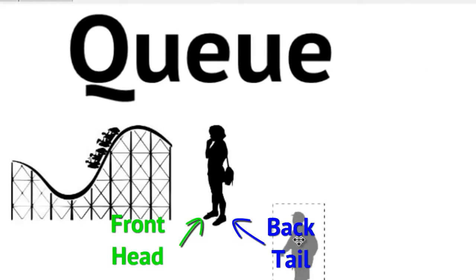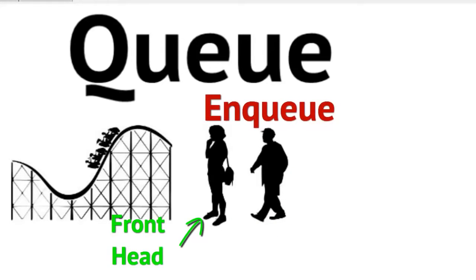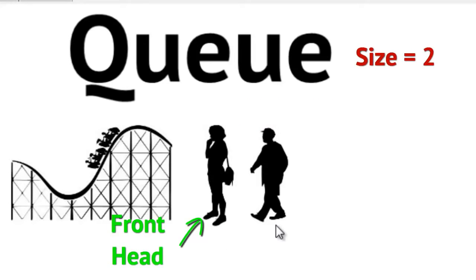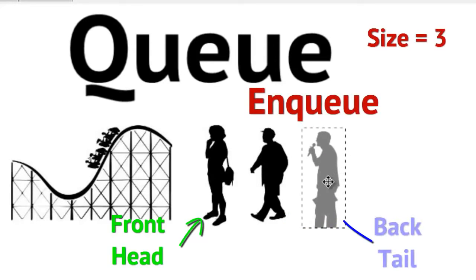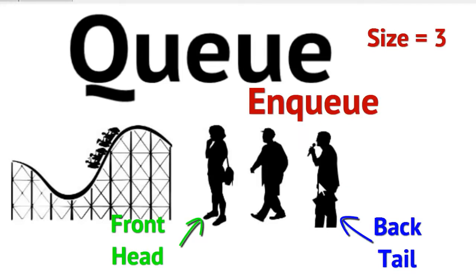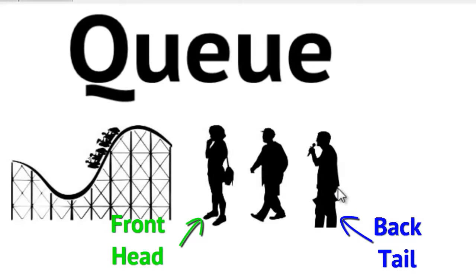Then a gentleman comes along interested in the roller coaster, and we say he has now been enqueued. This changes the size of our queue from one to two. The lady is no longer the back of the queue — she's still the front, or head. This gentleman is now the tail, or back. Then another person gets enqueued — he has a microphone, so maybe he's singing. He becomes the new tail of the queue. The lady is still the front, or head. The gentleman in the middle doesn't have a specific name — he's just somewhere in the middle.